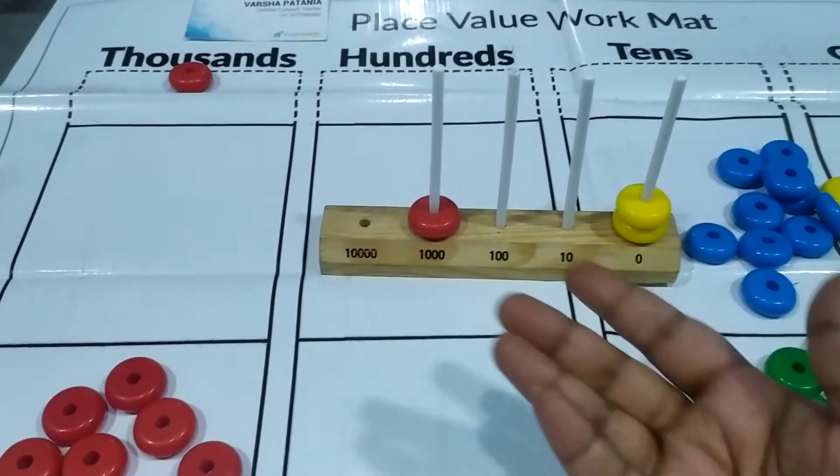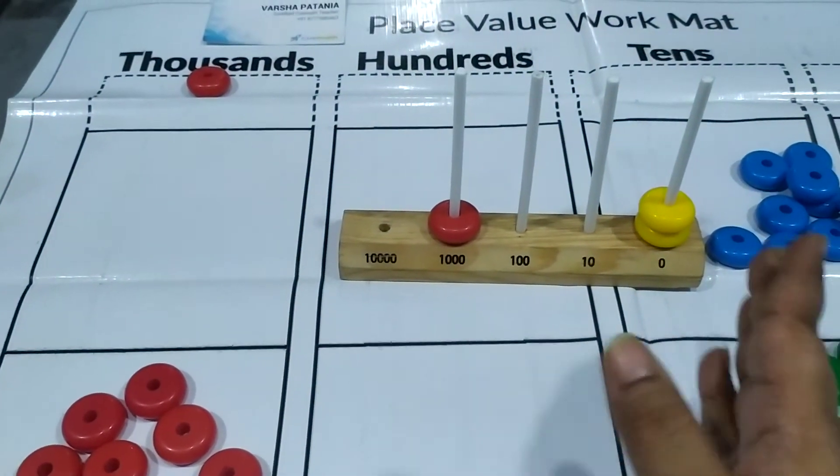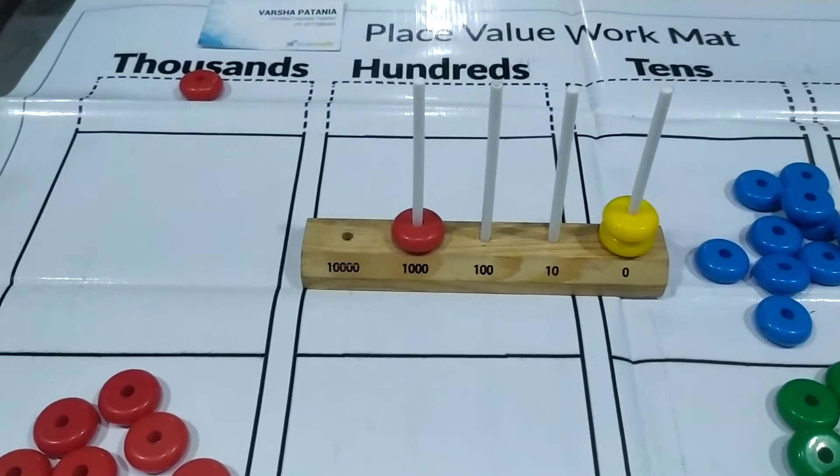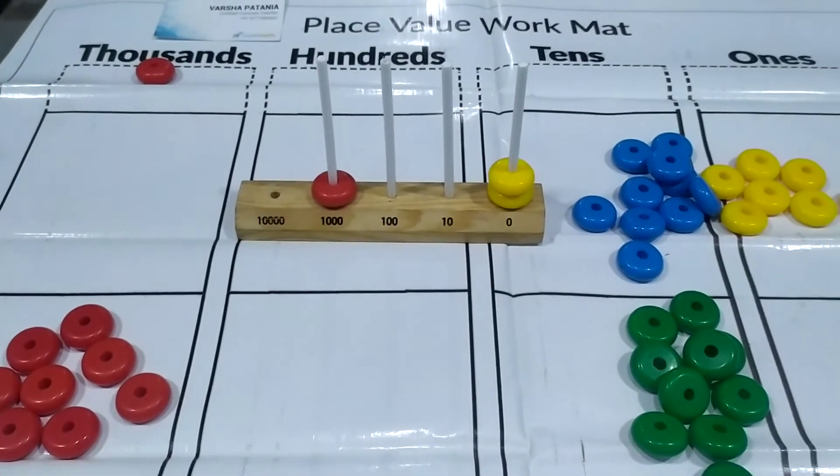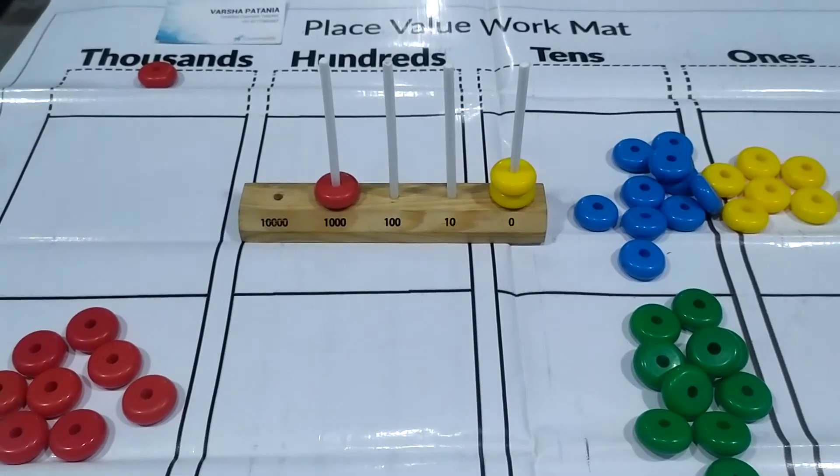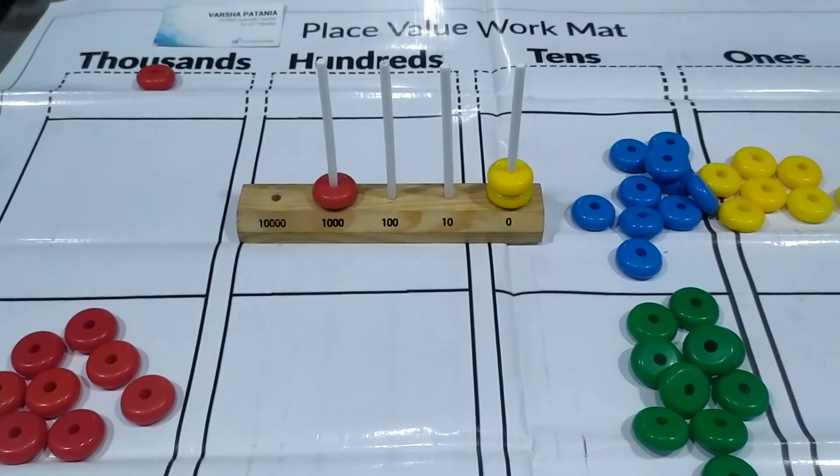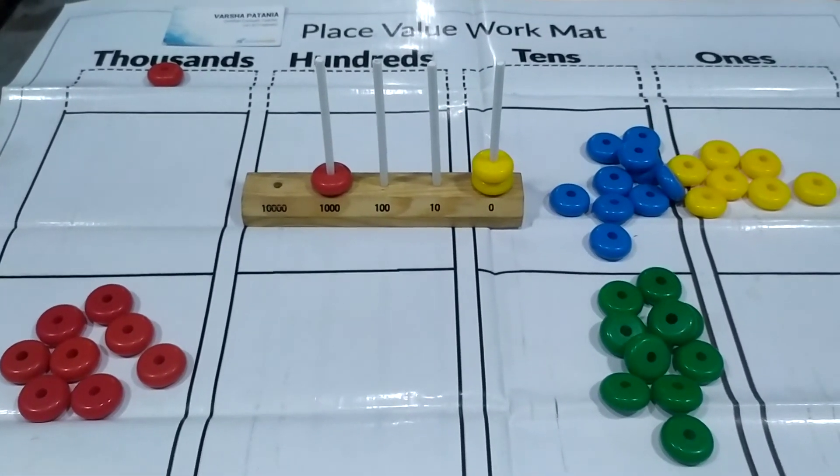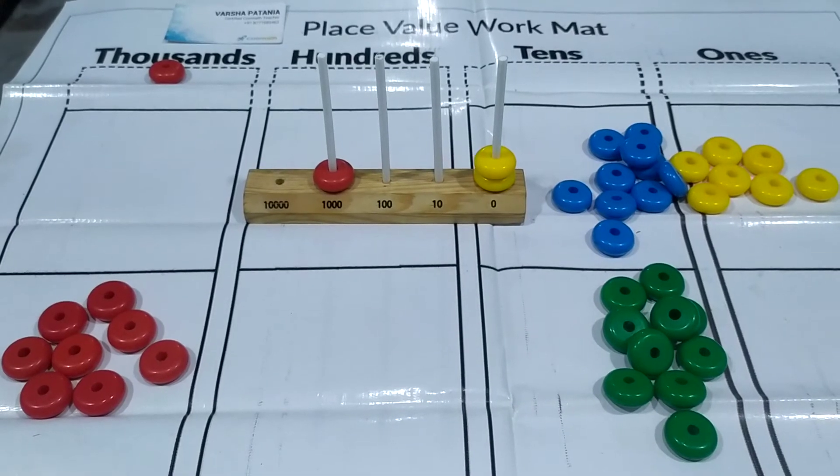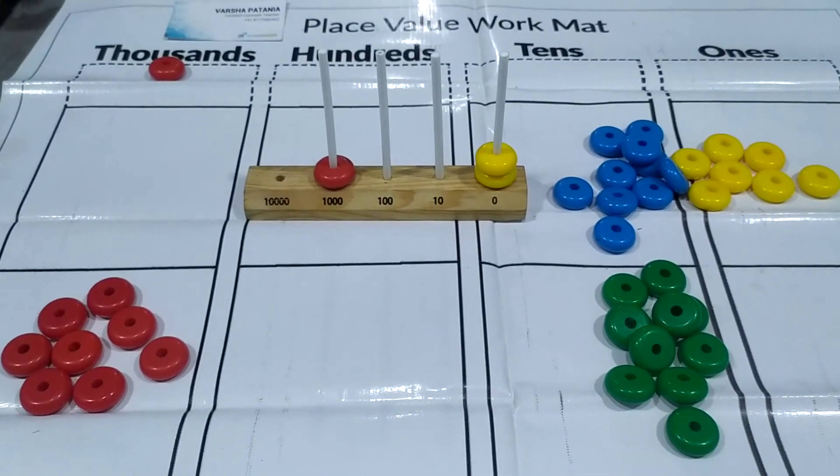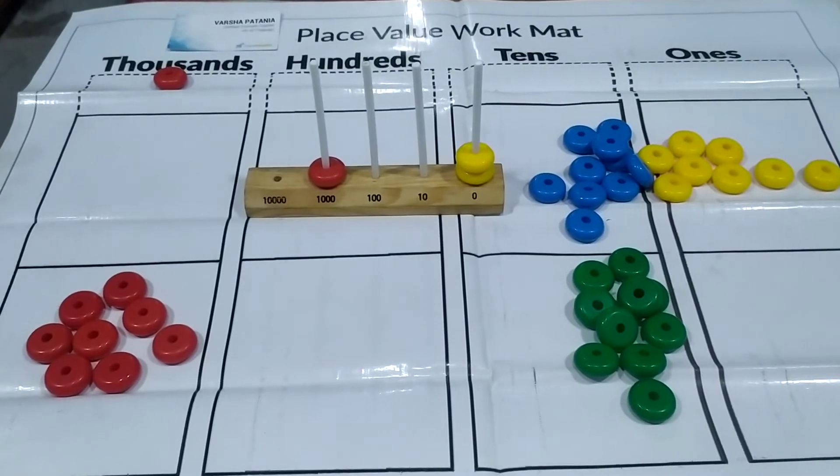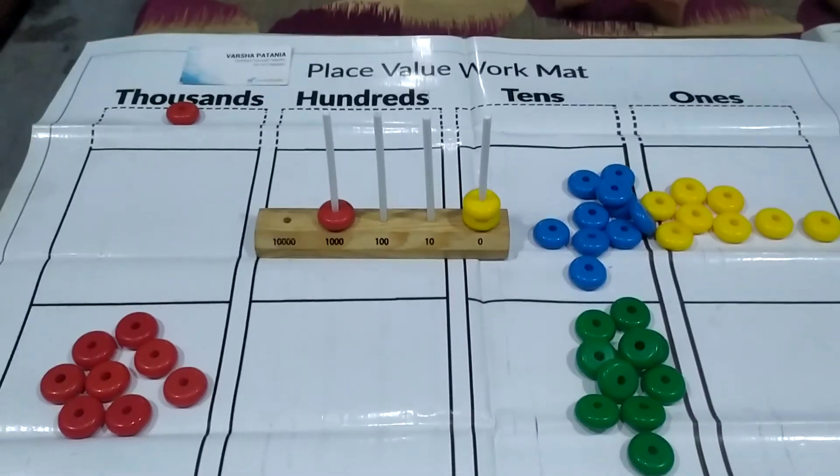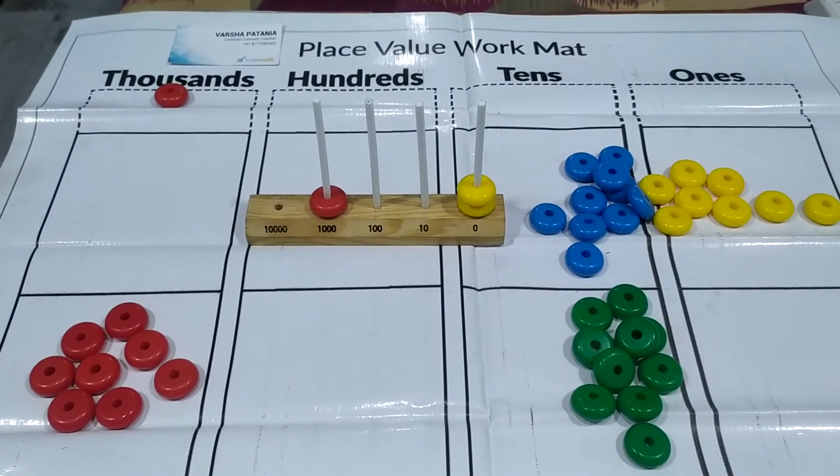And so on. The counting goes on and the child is having a very clear view of what he is doing with the visual aids. This is how we teach the child place value with the help of the place value work mat and the abacus as well as the FRBs, that is the flat rod and blocks. We do this all in our QMath class. We introduce the child to the QMath learning.